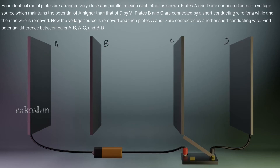He has named the plates A, B, C and D. Plates A and D are connected across a voltage source which maintains the potential of A higher than that of D by V0. So we have a voltage source V0 here, and plates A and D are connected by a wire. Let me now close the switch so that the potential difference between A and D is V0.